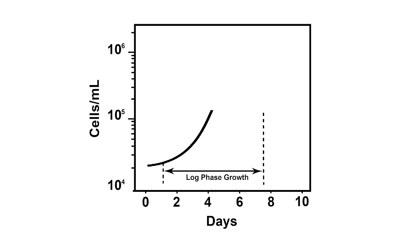The growth of cells in culture follows a standard pattern. A lag after seeding is followed by a period of exponential growth called the log phase.